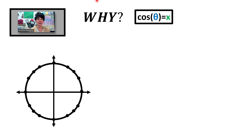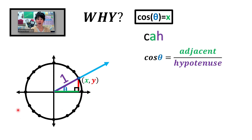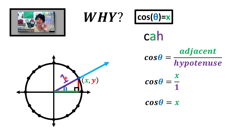Why is cosine of theta equal to the x-coordinate? Going back to that same diagram: I go to some point on the unit circle at (x, y), build a right triangle by connecting that point to the x-axis. The hypotenuse has length 1, the horizontal distance is x, and the vertical distance is y. From SOHCAHTOA, cosine is adjacent over hypotenuse. Adjacent to theta is the green segment of length x, and hypotenuse is 1. So cosine of theta equals x over 1, which is just x.